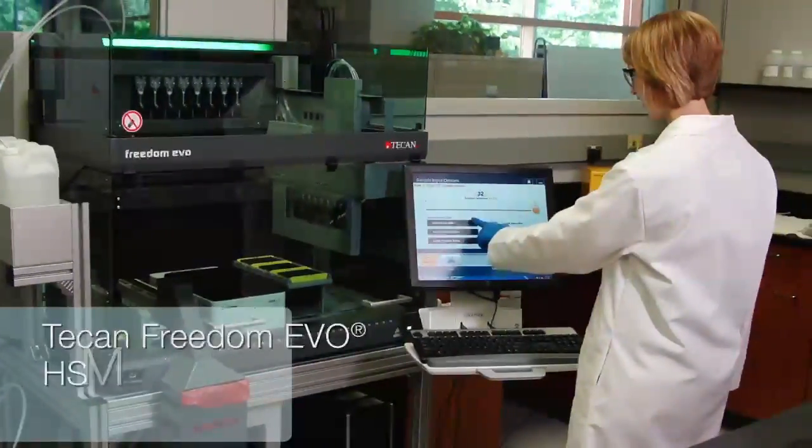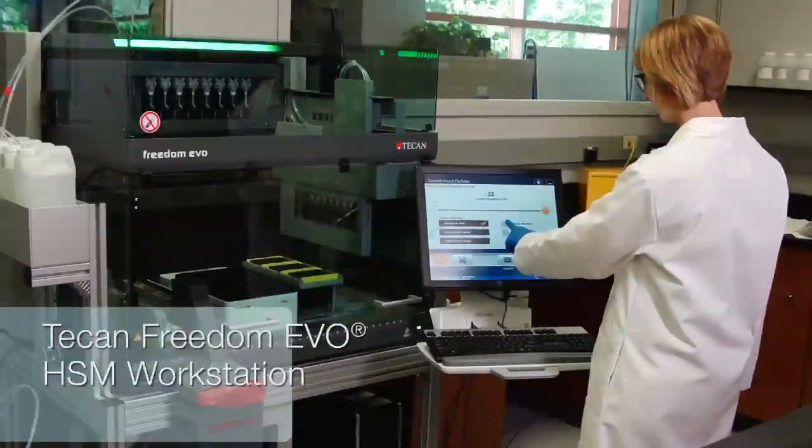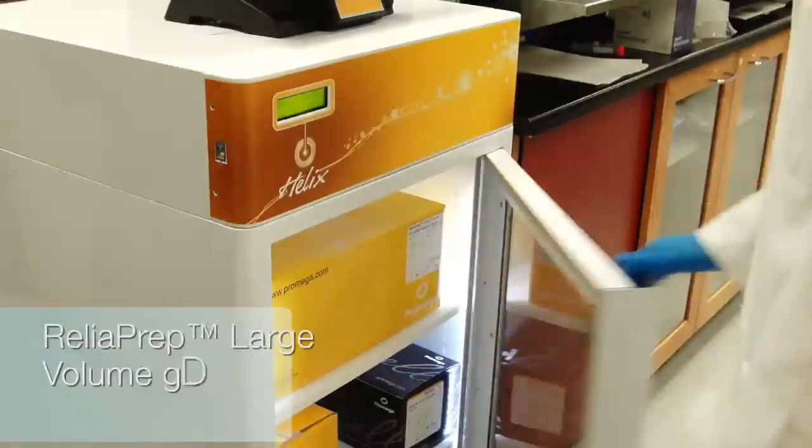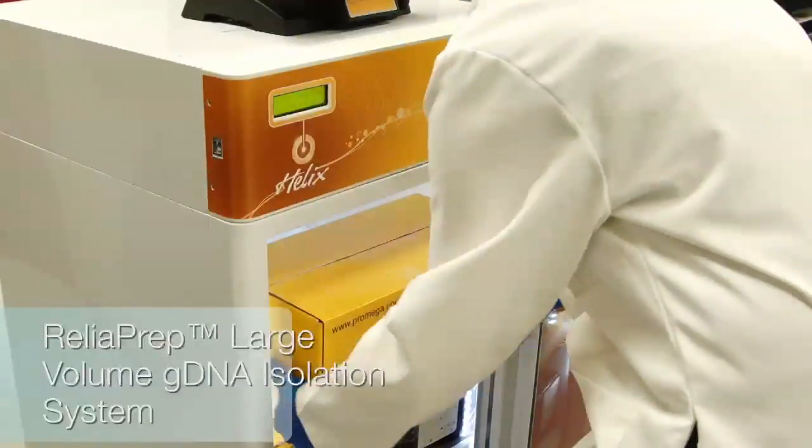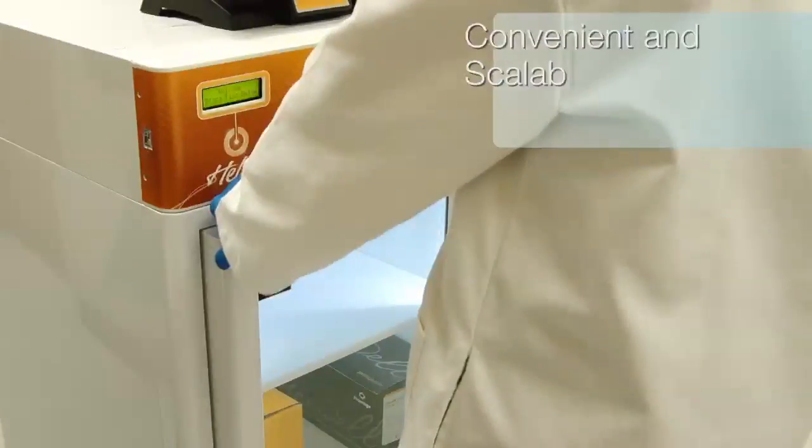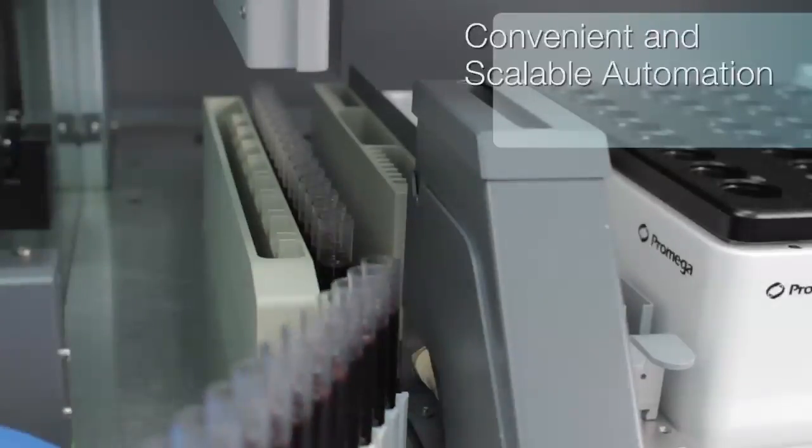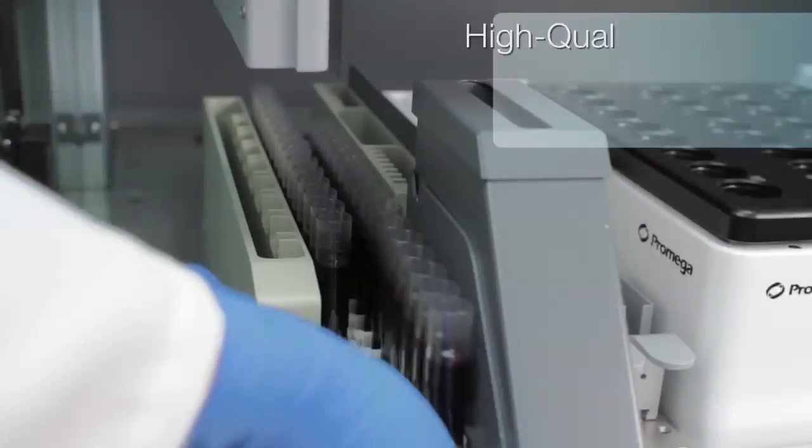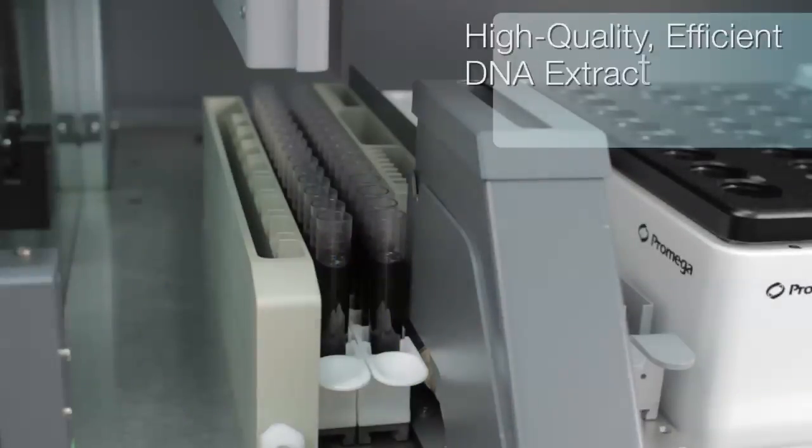Processing blood samples on the TKAN Freedom EVO HSM workstation using the PROMEGA ReliaPREP large-volume gDNA isolation system provides unparalleled convenience and scalability along with the quality and efficiency required by high-throughput genomics labs.